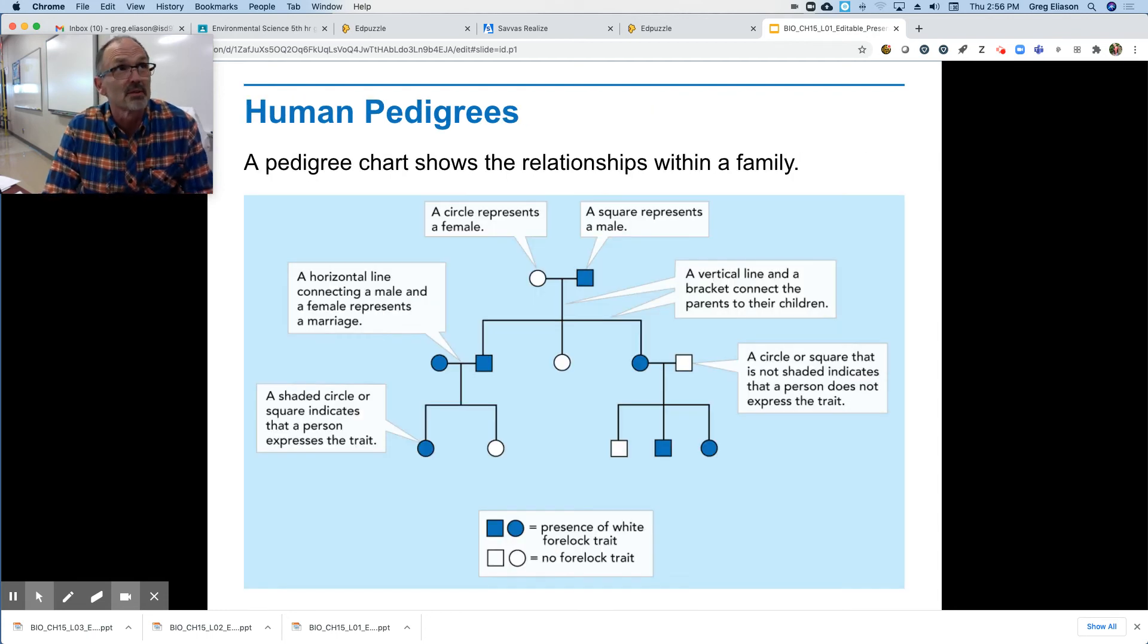Okay, so pedigrees. This is kind of important. So what we're looking at is a flow chart of a family tree, right? It could be a pedigree of anything, a dog, a cat, a family. But there's some constants that go with this. So when you look at this, you need to know how to interpret it.